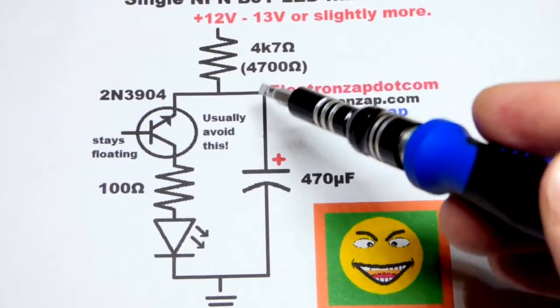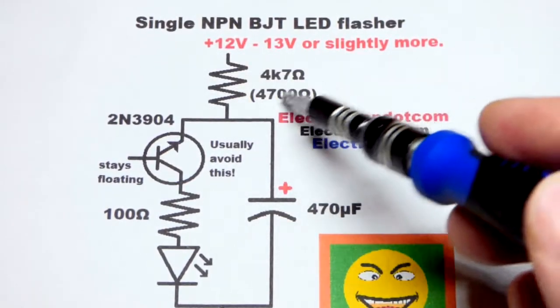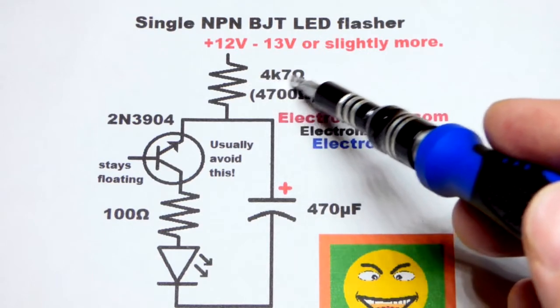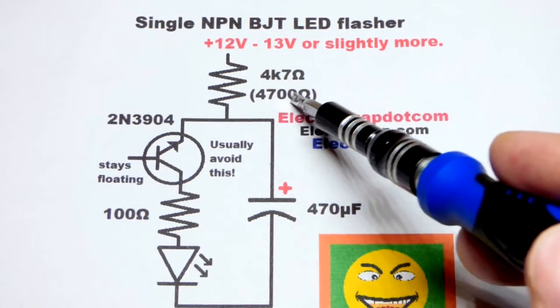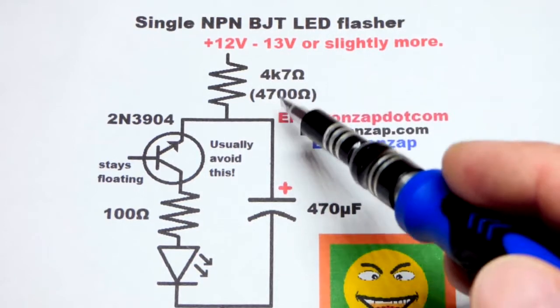So we're going to use a relatively high value capacitor here. Resistor, I mean. It's a 4K7. That's the same as 4.7K or 4,700 ohms. So sometimes it will be written like that.